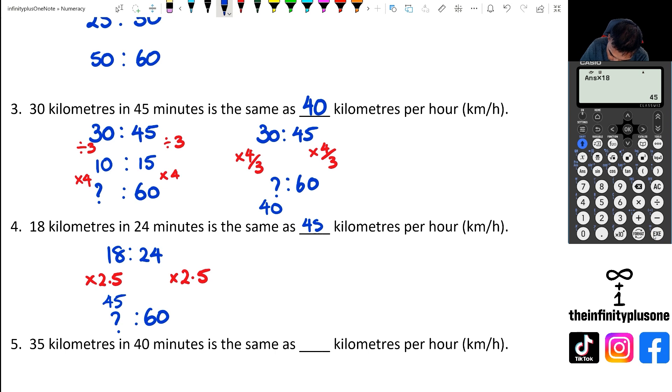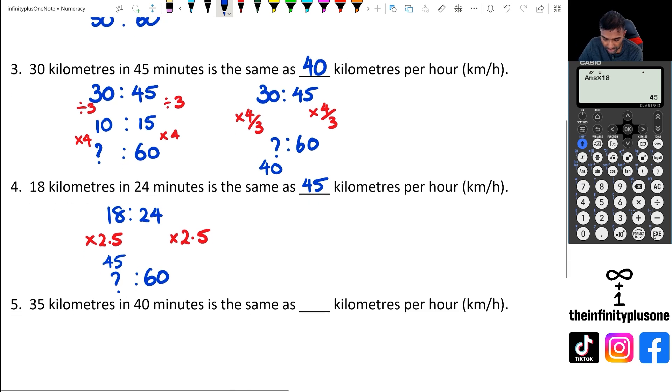So 2.5 times 18, and that's going to be 45. So here, it's going to be 45 kilometers per hour. Of course, you could always do 24 divided by four to get it to six, and then multiply it by 10 to get to 60. Multiple ways of doing these types of questions.